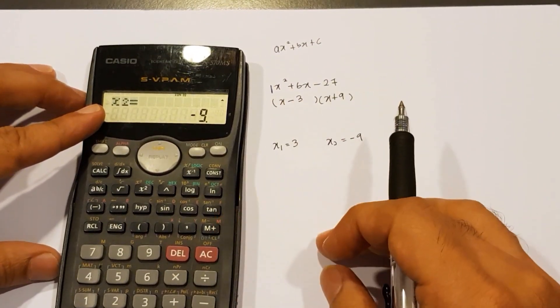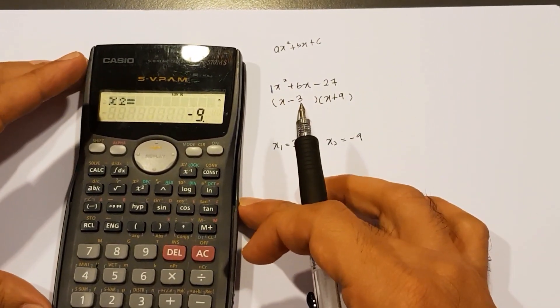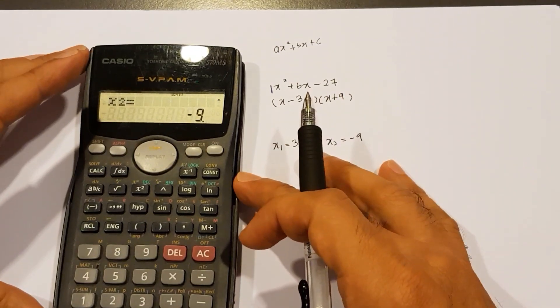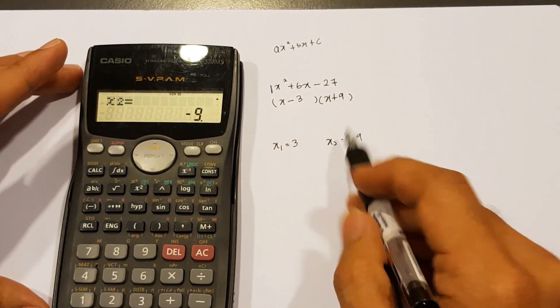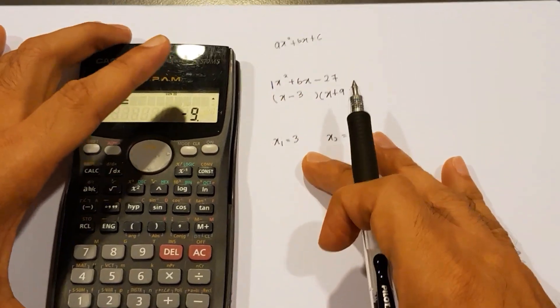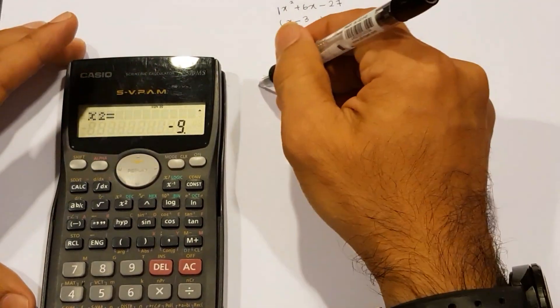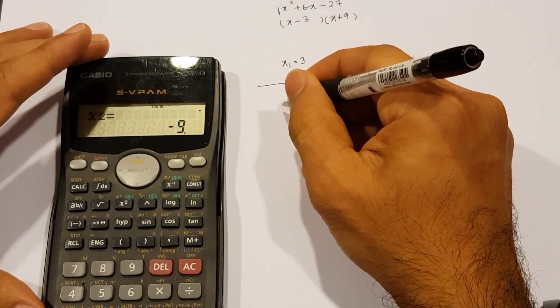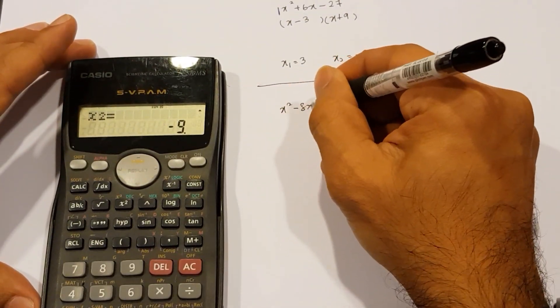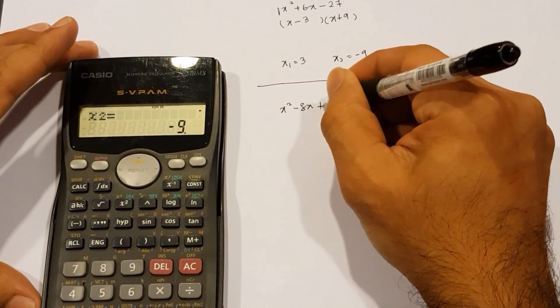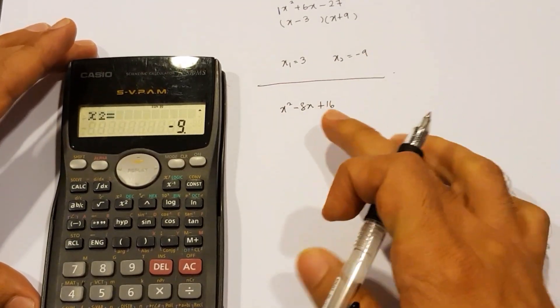However, we may encounter some questions where we may only have one bracket, or the possibility of getting the x numbers as fractions. Let's have a look at a different question. Now let's say you're given x squared minus 8x and then plus 16. Same process.